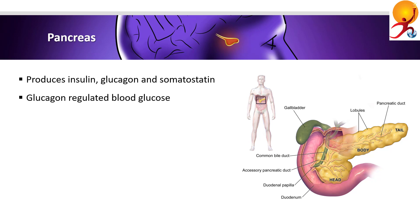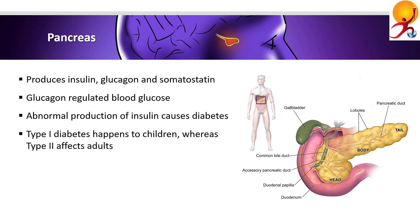Glucagon increases blood glucose while insulin reduces it. Glucagon stimulates glycogenolysis, forming glucose from the breakdown of glycogen. Insulin is the hormone responsible for the entrance of glucose from the blood into cells. While glucagon targets the liver, insulin works in all cells. Somatostatin inhibits both insulin and glucagon secretion.